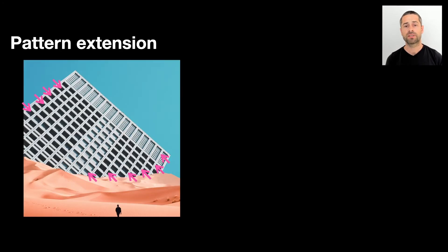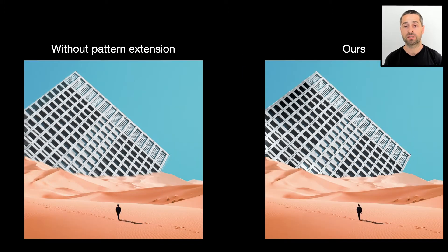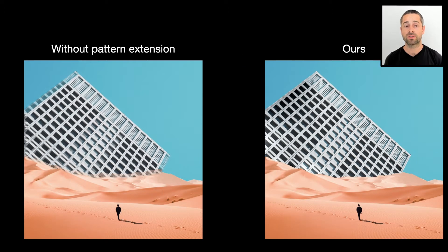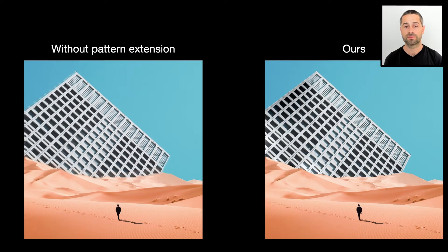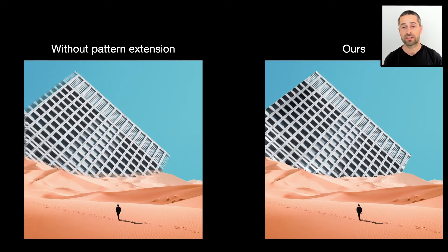We don't want surrounding pixels to be pulled into the moving area, so we replace them by extending the pattern outwards. Notice how now the bases of the arrows touch the extended building pattern and not unrelated pixels of sky or sand. If we don't extend the pattern, notice how the sky and sand bleed onto the animated region. Our result on the right has no bleeding artifacts.